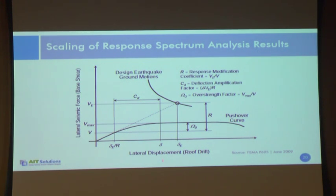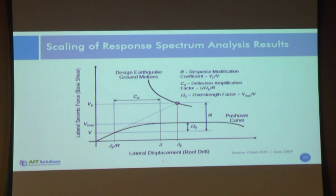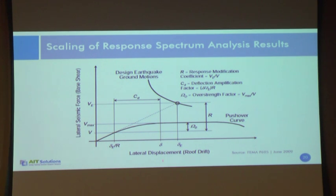If we do the performance-based evaluation for MCE level, we do not need to consider those R factor and omega-zero factor, because in our MCE level evaluation, our analysis already captures those maximum responses. So we do not need to amplify the forces by those factors. Those factors are also quite arbitrary — we are not sure that omega-zero will always mean the force is 2.8 times larger than the design base shear. Our linear model for MCE level gives us more realistic results.